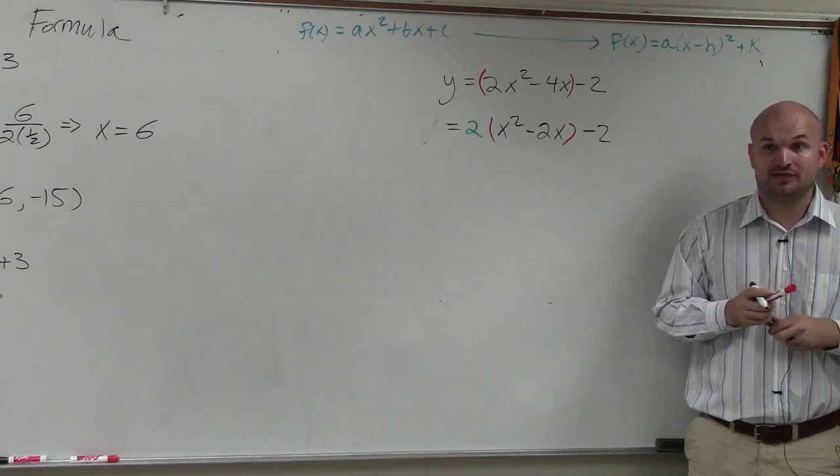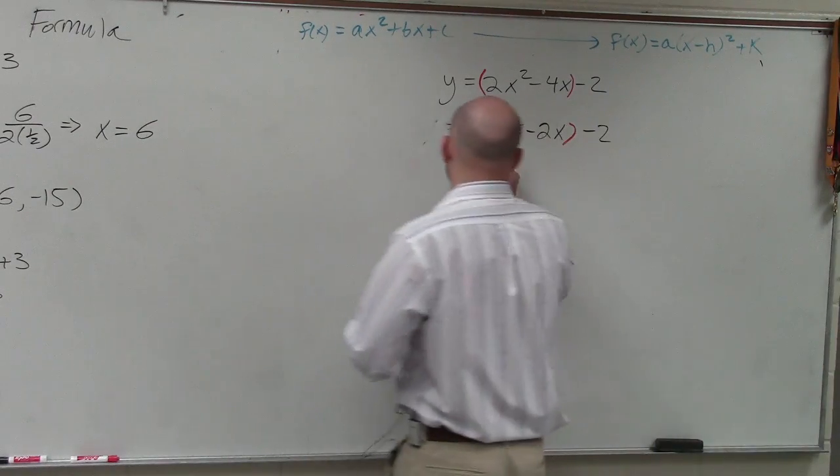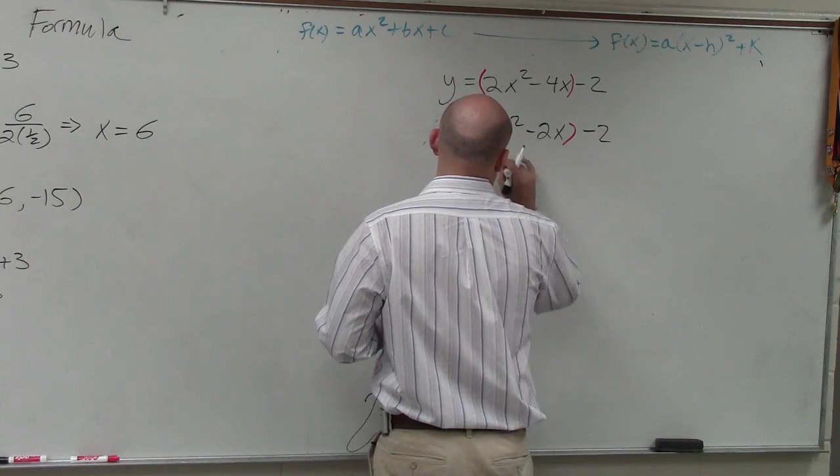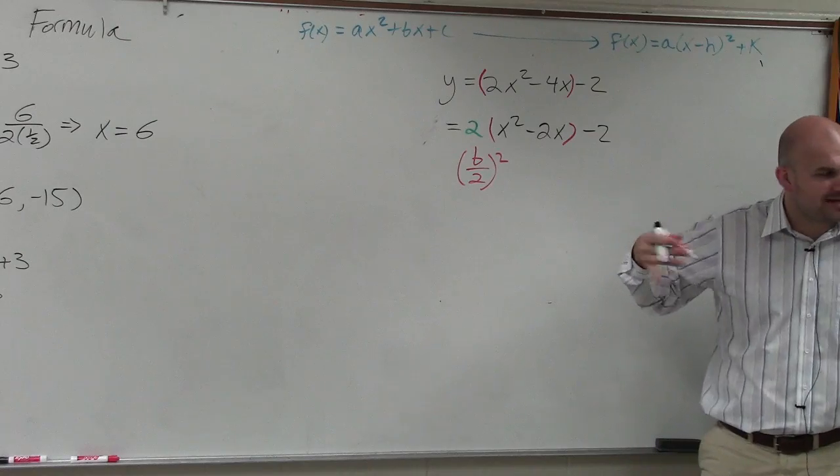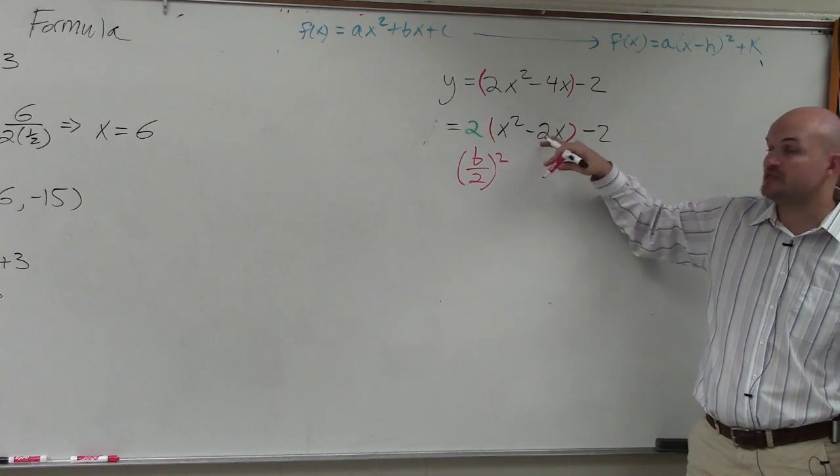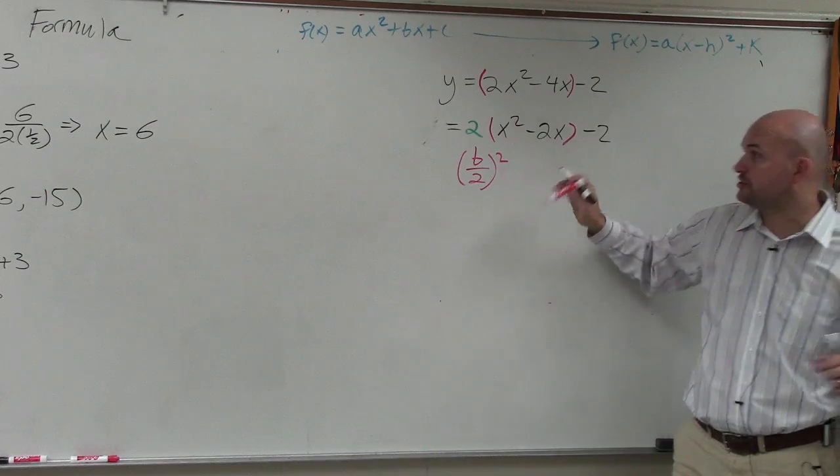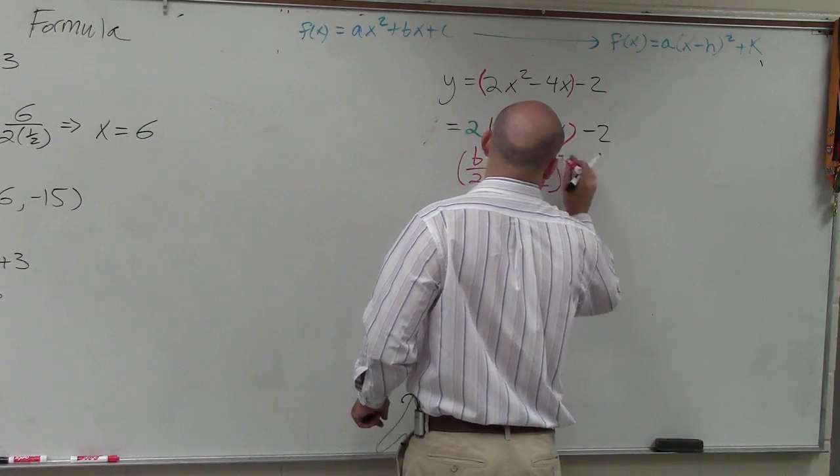Now we do the completing the square thing that was on your homework before I was gone. b divided by 2 squared. So now, here's a little trick question that I wasn't here to explain when I was gone. You're not going to use this b. You're going to use the b from this equation. So you're going to do negative 2 divided by 2 squared.